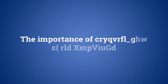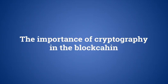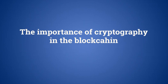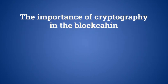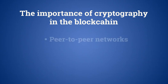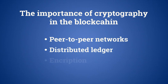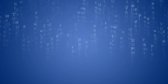Blockchain technology is made possible by the joint use of three pre-existing technologies: peer-to-peer networks, the distributed ledger, and encryption. The first two we have already discussed in the previous video. Let's see now how encryption is used to achieve two fundamental and vital results in a blockchain.